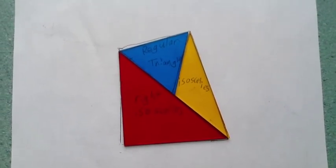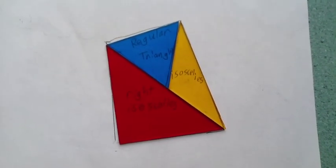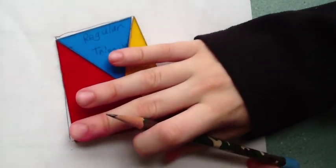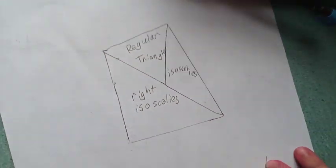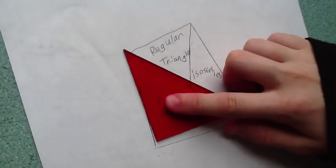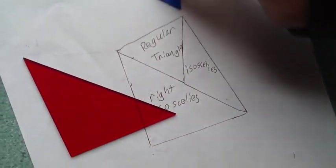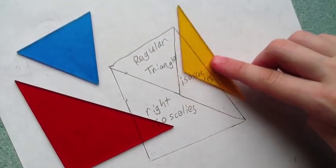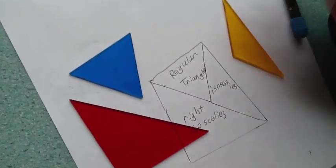We're going to try to define the angle measurements of this polygon. We already figured out what it was made of. It's made of one right isosceles triangle, one regular triangle, and one isosceles triangle.